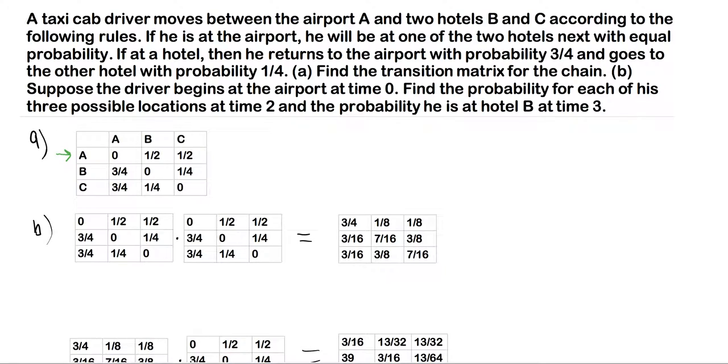A taxicab driver moves between the airport A and two hotels B and C according to the following rules. If he is at the airport, he will be at one of the two hotels next with equal probability. If at a hotel, then he returns to the airport with probability three-fourths and goes to the other hotel with probability one-fourth.